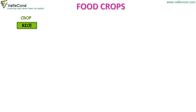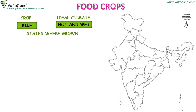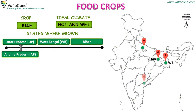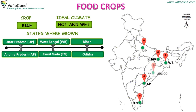Now let's discuss food crops in detail. Rice. The ideal climate for rice is hot and wet. States where rice is grown are Uttar Pradesh, West Bengal, Bihar, Andhra Pradesh, Tamil Nadu and Odisha.